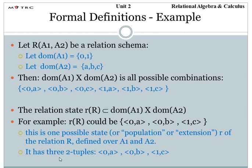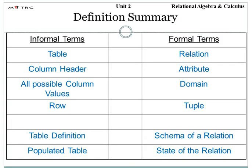In short, this table completely defines the summary and compares the formal and informal terms. For example, we call a relation a table in an informal manner — it is a table — but when we discuss terms in relation with the relational model, it is defining a relation. The column header of the table is the attribute name, all possible column values comprise the domain, a row denotes a tuple, and the table definition denotes the schema of the relation.